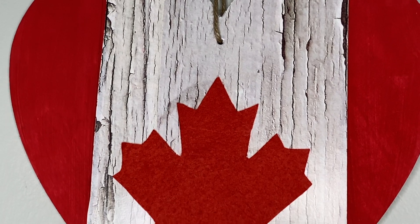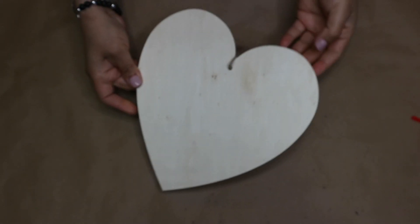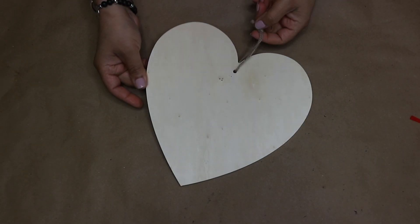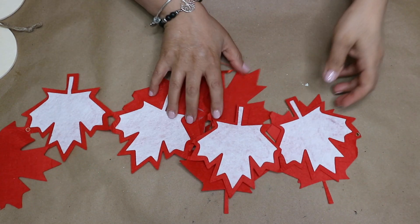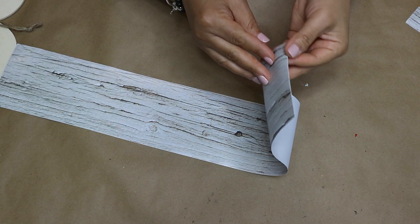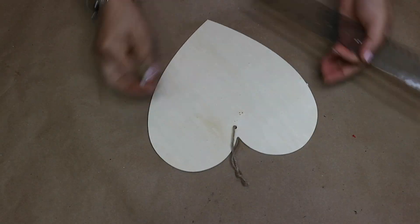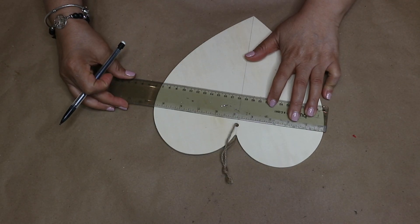For this project I am using this wood heart shape from Dollar Tree. Also I am going to use some of this felt garland of maple leaves that I had from Dollar Tree last year, and this faux wood stickers that come in a pack of eight pieces from Dollarama.